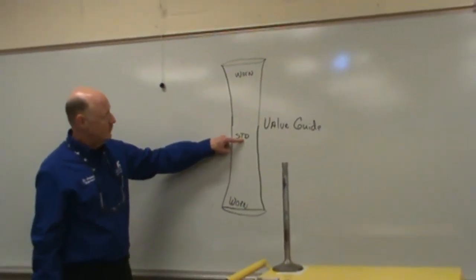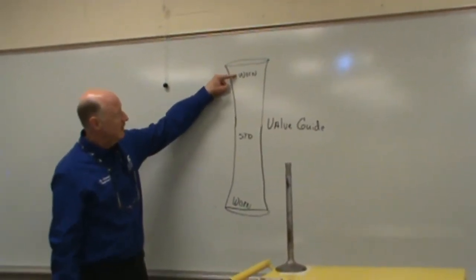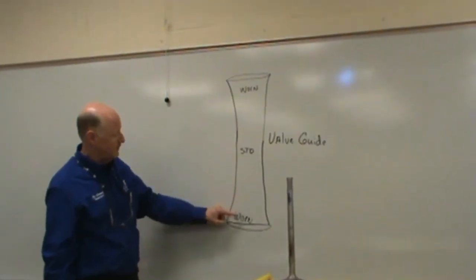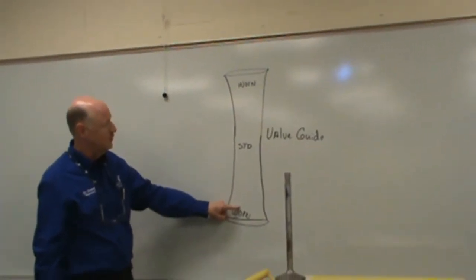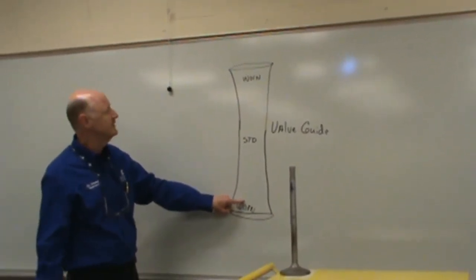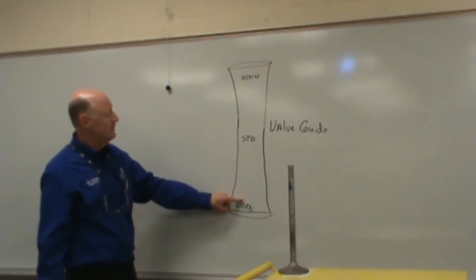which is the unworn area, we would take our larger numbers up here, which would be like 0.374, 374 thousandths of an inch, we would subtract the two, and that would be three thousandths of an inch, where we would have three thousandths of an inch wear.